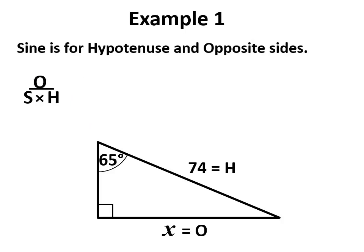SOH - we want to find the opposite. If I grey out the opposite, it tells me the relationship: opposite is sin times hypotenuse. Then we just stick that in our calculator.